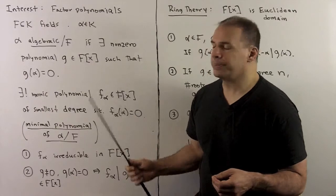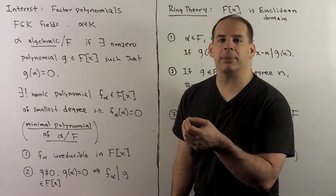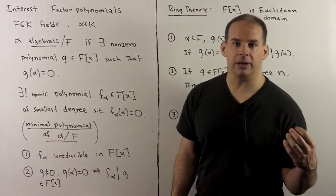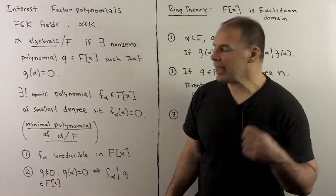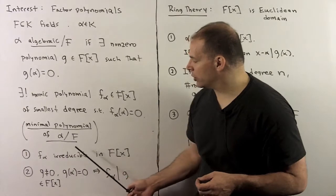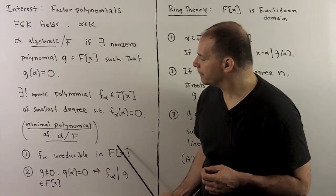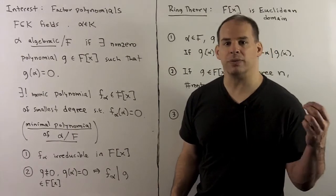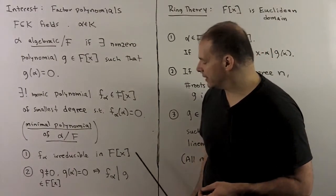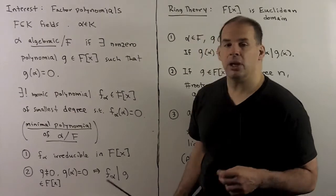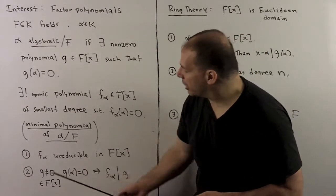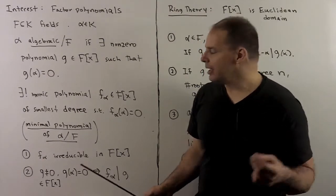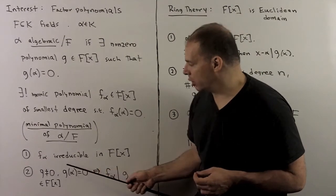How do we find f_alpha? We consider the evaluation map from polynomials to f, sending each f(x) to f(alpha). With that, f_alpha is the zero of the polynomial ring for f, and if I have a non-zero polynomial g with coefficients in f and alpha is a root of g, then f_alpha divides g. This gives a first step in our factoring problem: if I can find a root alpha of g, then we can factor out the minimal polynomial of alpha.